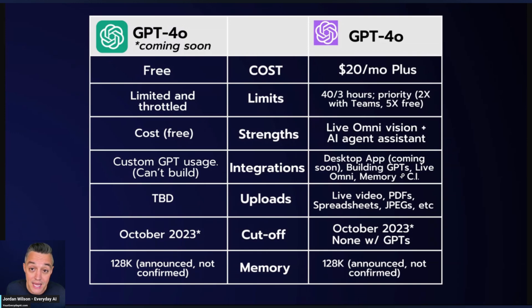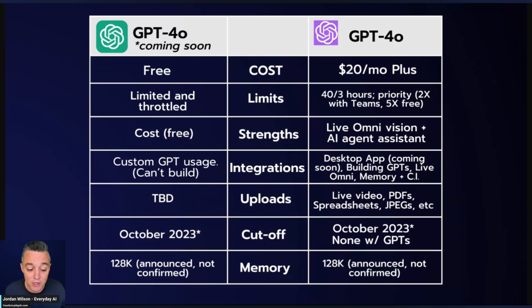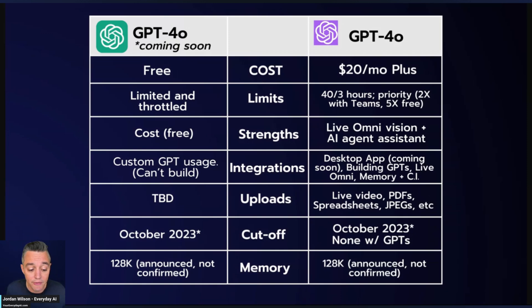A couple of other integrations are for paid plans only. We talked about live Omni vision in the iPhone app and the desktop app — which is coming soon, at least early on to Mac. Building GPTs is a big part of the new addition: free plan users can use custom GPTs, which is huge — it's a user play, an SEO play, a data play — but you can only build custom GPTs if you have a paid ChatGPT Plus account. Also, you only have access to the cross-chat memory feature on a paid plan, and you only have access to custom instructions on a paid plan. You do not have those on the free plan.